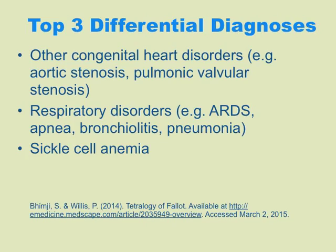The top three differential diagnoses — which are harder to find but e-medicine is a great source — are: first, other congenital heart disorders like aortic stenosis or pulmonic valvular stenosis; second, respiratory problems such as acute respiratory distress syndrome, apnea, bronchiolitis, croup, pneumonia, or even foreign body; and third, sickle cell anemia.